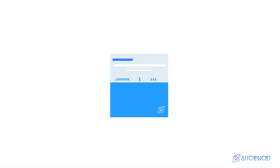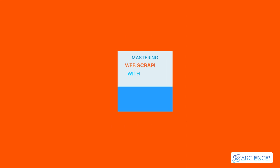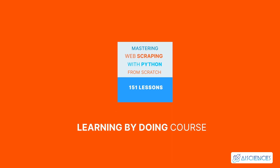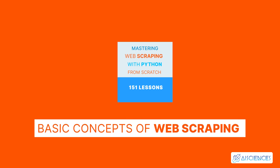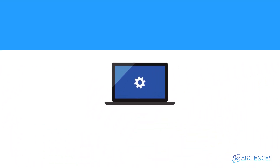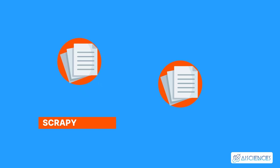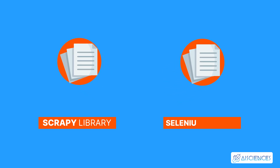We have an in-depth course on AI Science's platform that covers web scraping. The course is called Mastering Web Scraping with Python from Scratch, consisting of 151 lessons. In this learning-by-doing course, you'll master basic concepts first, then move on to advanced concepts. You will learn how to use popular Python web scraping libraries such as Requests, LXML or CSS selectors, Scrapy, and Selenium. You'll also complete two hands-on mini-projects — the first using the Scrapy library and the second using Selenium.